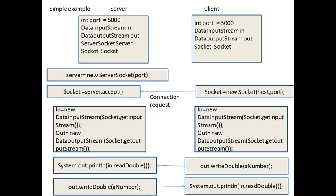In this example, we have given the port number as 5000 on the server side and port number 5000 on the client side. The DataInputStream reference 'in' has been created, and the DataOutputStream reference 'out' has also been created. The ServerSocket reference 'server' and the Socket reference are created on the server side.